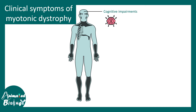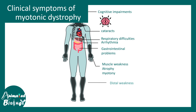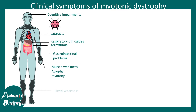This particular repeat leads to functional abrogation of these mRNAs, so overall it's a nucleotide repeat expansion disease. The clinical symptoms can include cognitive impairments, cataracts, arrhythmia of the heart, and respiratory difficulties because the diaphragm can be affected. Gastrointestinal problems are also associated, but the most prominent ones are muscle weakness and distal muscle weakness — basically the legs and hand muscles are the ones that get weakened over time.